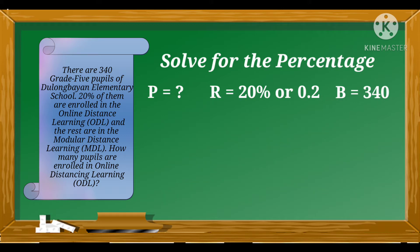And the base is 340. What is the formula to find the percentage of a number? The formula is P = R times B, wherein P is the percentage, R is the rate, B is the base.